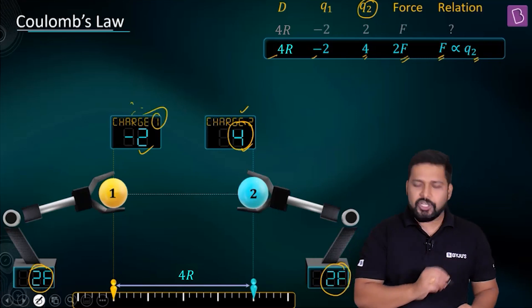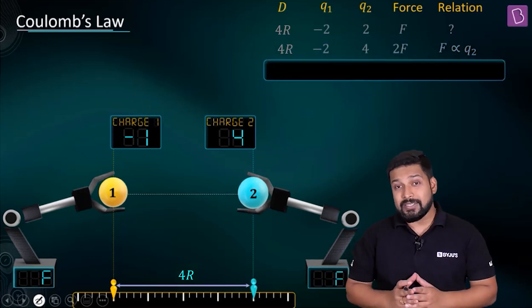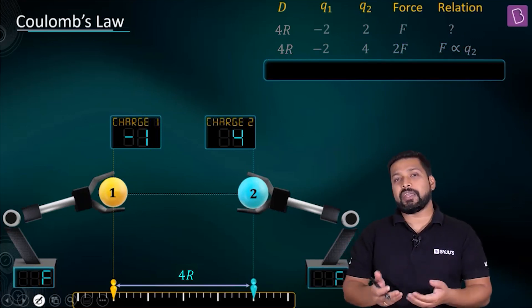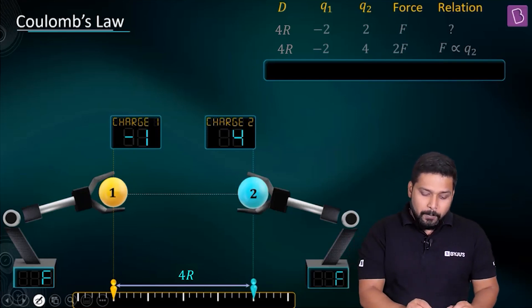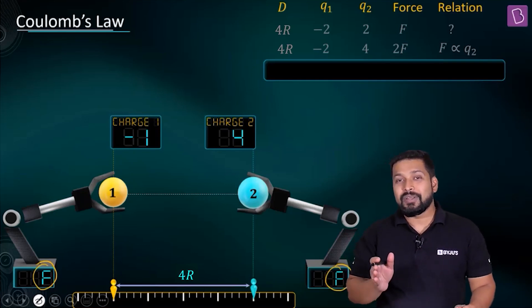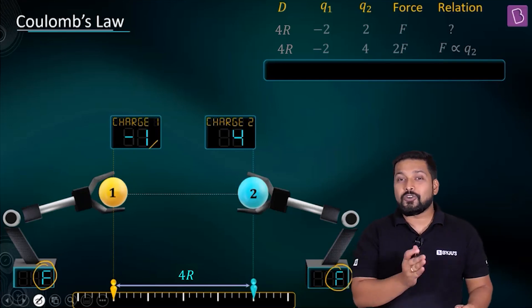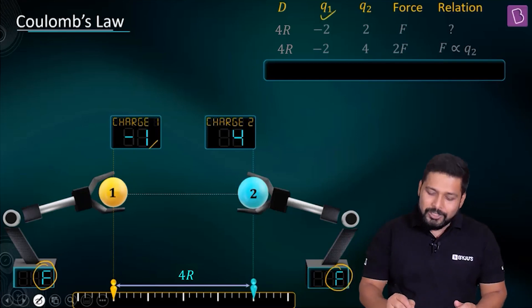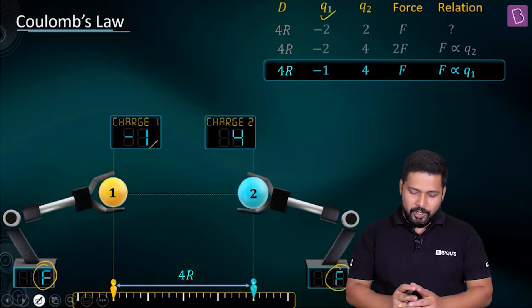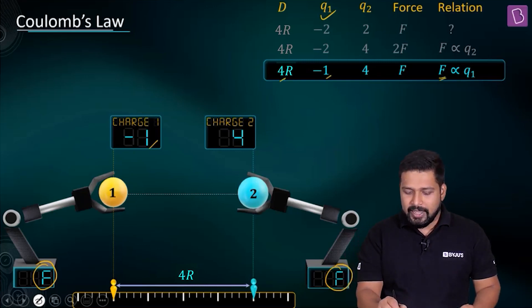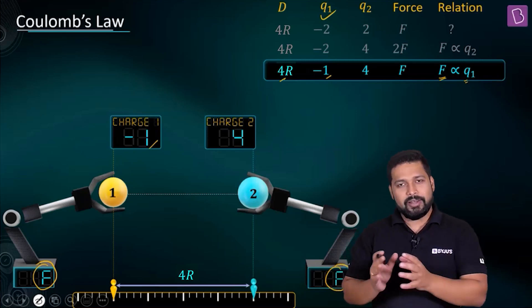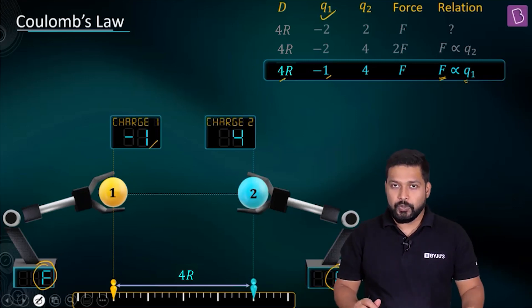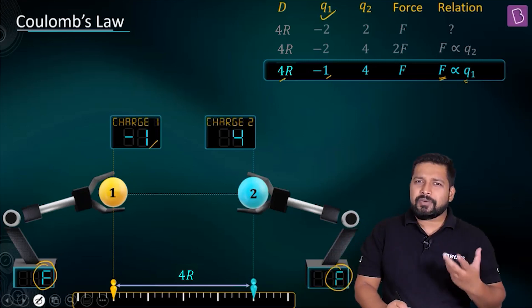Now let's keep Q2 fixed at 4 and change Q1. Initially Q1 was −2 and force was 2F. When Q1 is made half — changed to −1 — the force also becomes half of 2F. Since halving Q1 halved the force, the force is also directly proportional to Q1. So far: F is directly proportional to Q1 and to Q2.